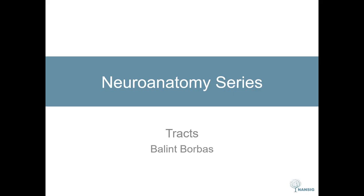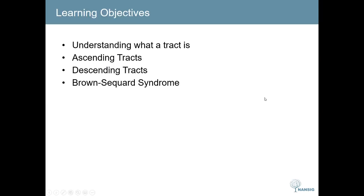Welcome to the NANSIC Neuroanatomy series. Today we will be covering the tracts of the central nervous system. My name is Bobas and let's begin. Moving on to the learning objectives: we're going to start by understanding what a tract is, then moving on to the ascending tract and then the descending tract. We'll also cover Brown-Séquard syndrome and how it affects the various tracts.